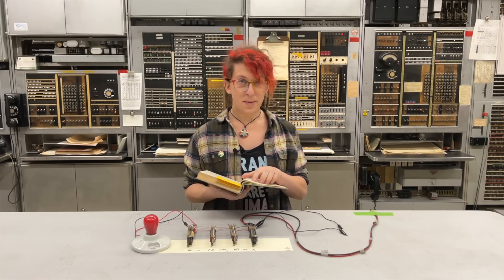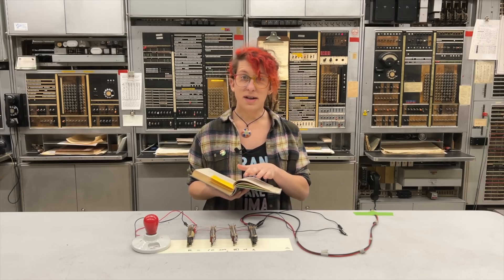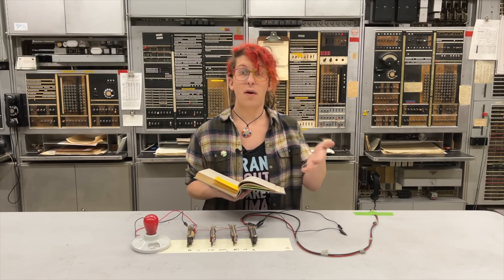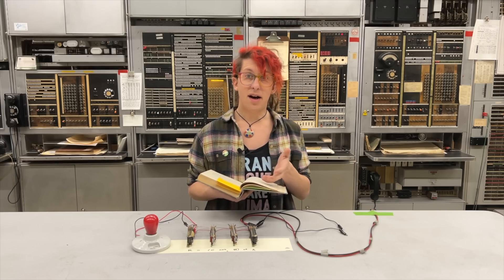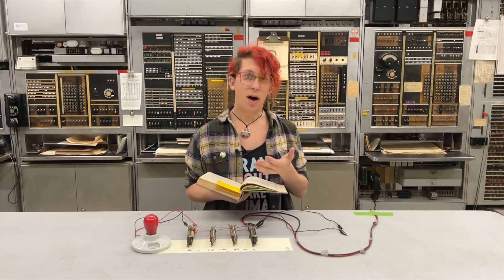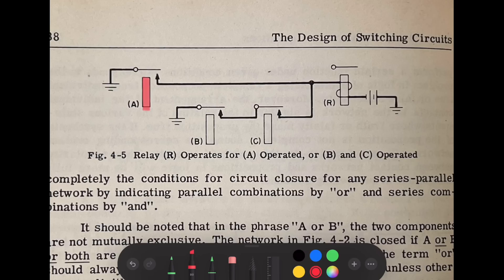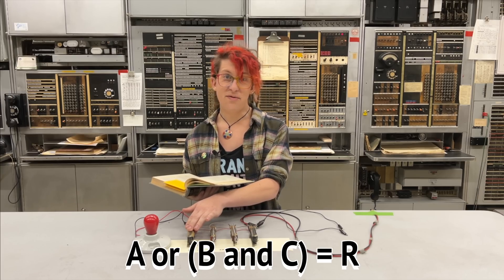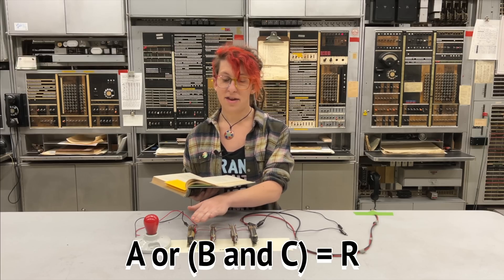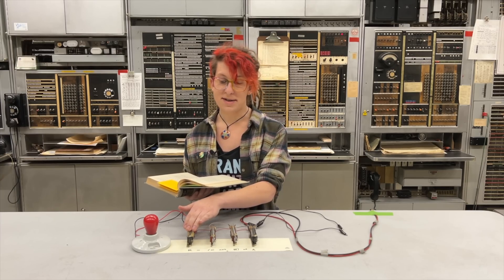The rectangles here represent the relay coils. If we apply current to the coils, they'll become magnetized and the relay will operate. These here are the relay contacts, shown in their normal or unoperated configuration. When relay A operates, it will pull its contact towards the core and create a path from ground through the winding of relay R to ground, causing R to operate. In the same way, if B and C operate, they will close a path to ground to operate R. Logically, we could express this as: if A or B and C, then R. And any time R operates, the lamp will light.